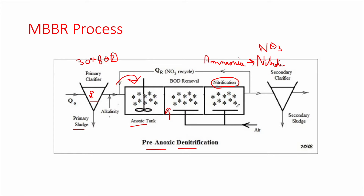Part of the wastewater from the nitrification tank is recycled back into the anoxic tank — this is the NO3 recycling — where nitrates are eliminated as nitrogen gas. In the pre-anoxic configuration, the anoxic tank comes first, before the nitrification, specifically to utilize the carbon source from the primary clarifier. If the anoxic tank were placed after the BOD removal tank, there would be no carbon source available and denitrification would not occur.